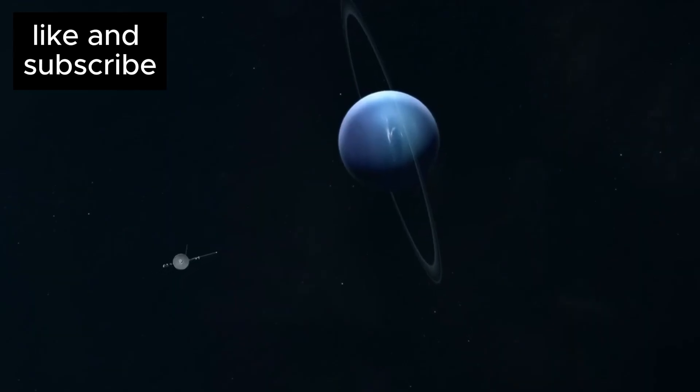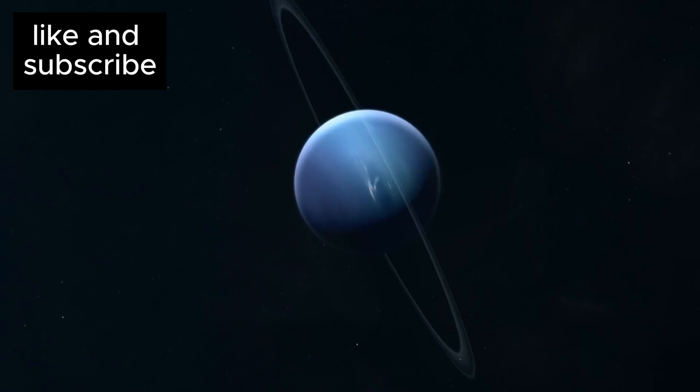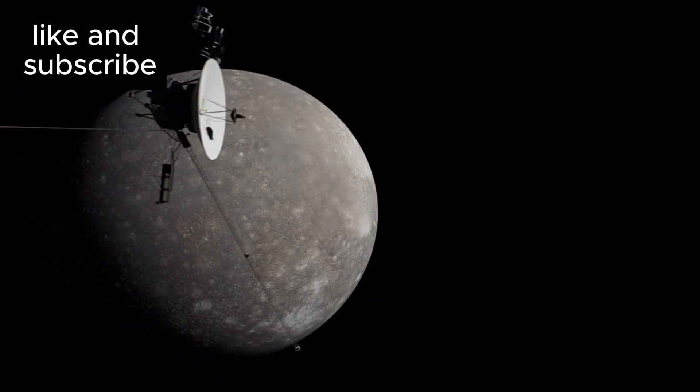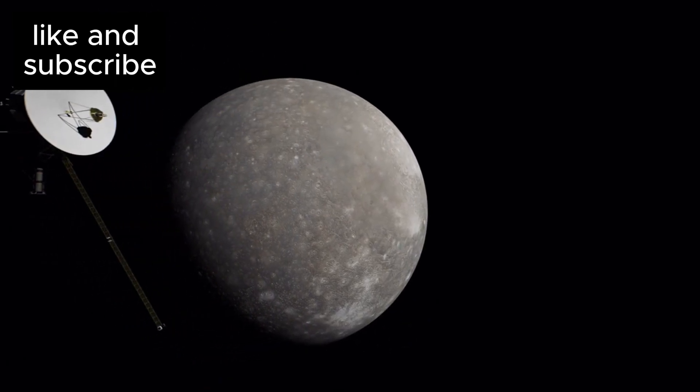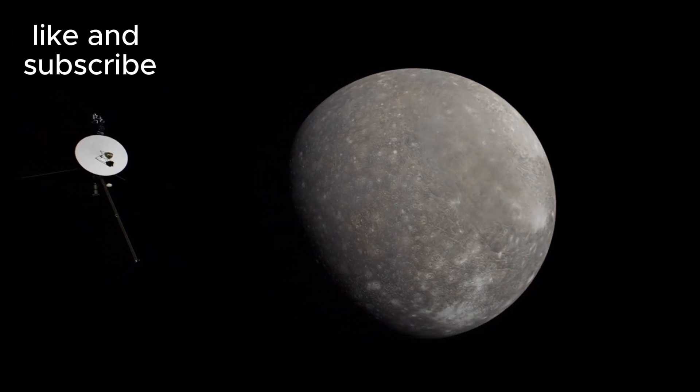Unlike past space missions that focused primarily on the inner workings of our solar system, Voyager 1's trajectory took it far beyond the Sun's protective influence, into what is known as interstellar space. In August 2012, the spacecraft crossed the heliopause, which marks the boundary between our solar system and the vast expanse of interstellar space.